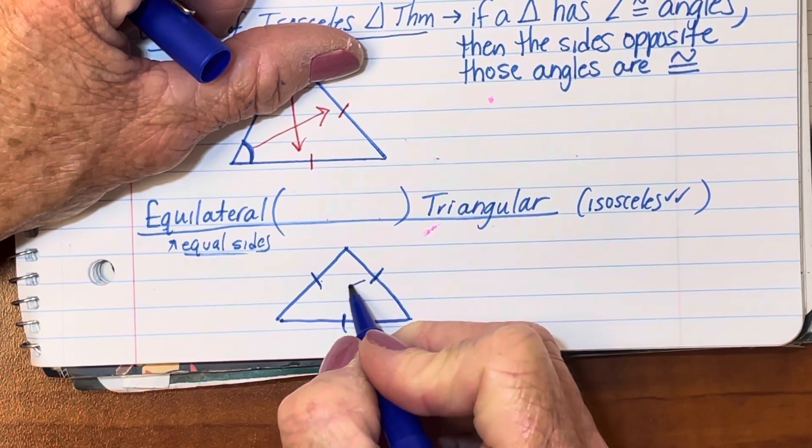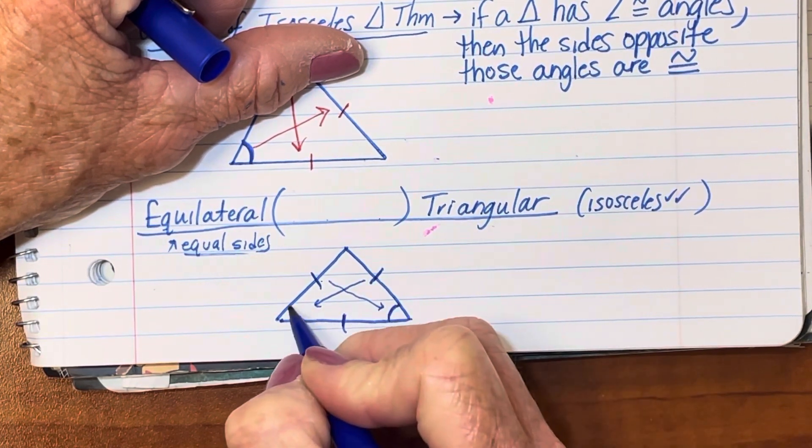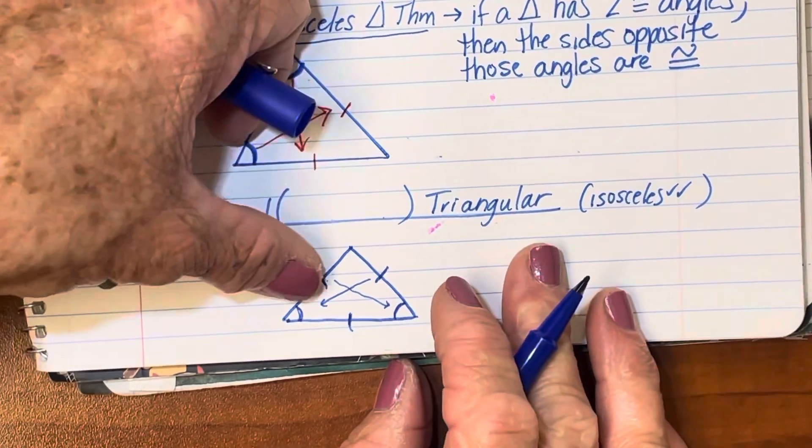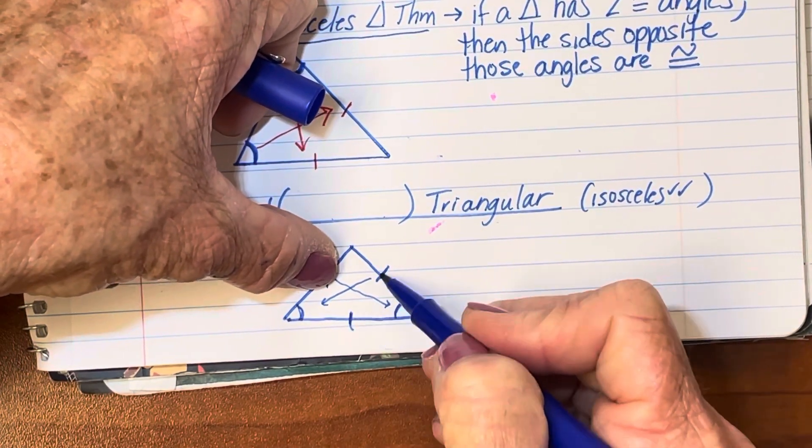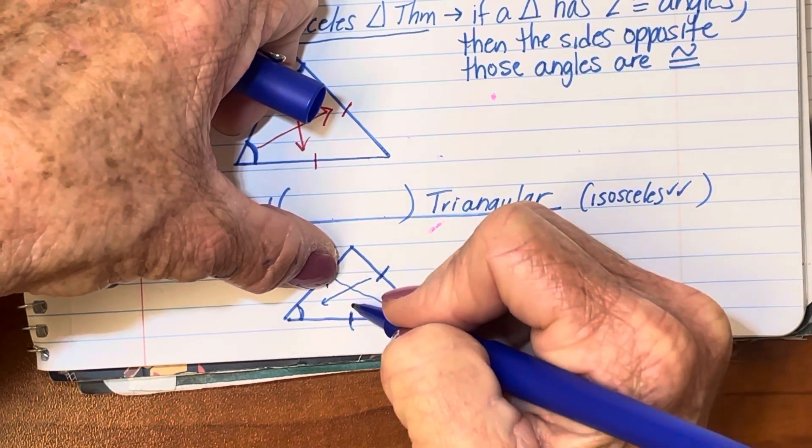So here's a pair of congruent sides. If I go across from those sides, these are the two angles that are congruent, but these two sides are congruent as well.